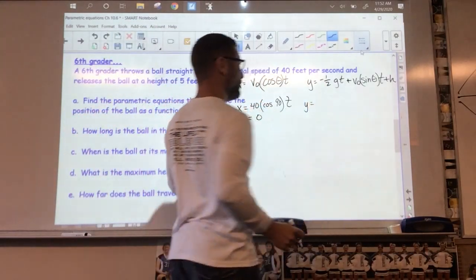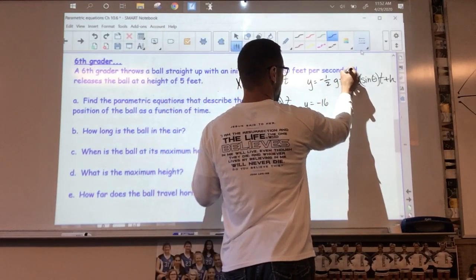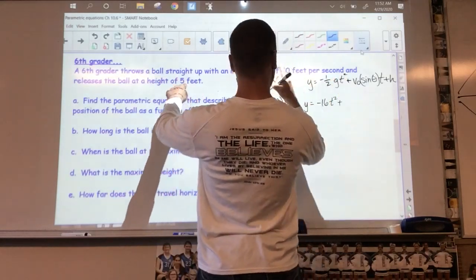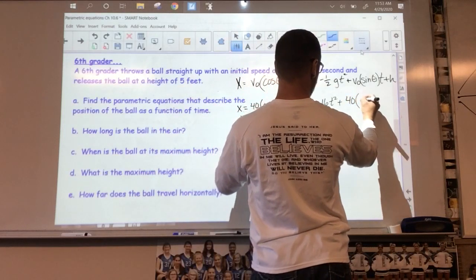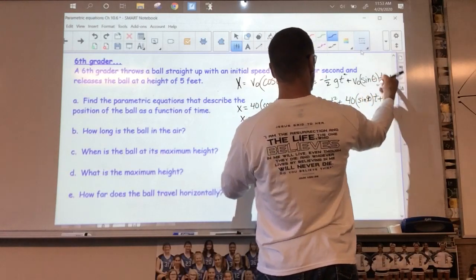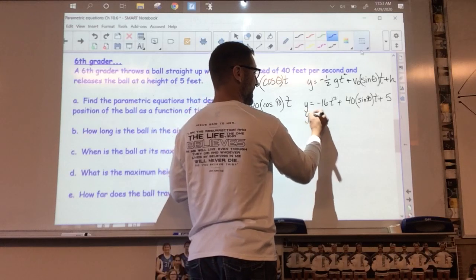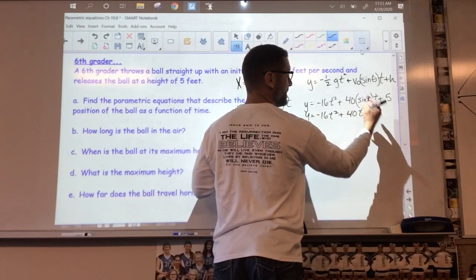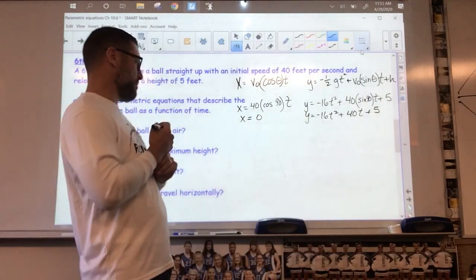This one y equals negative one half of g. This is in feet per second again. So the gravitational constant is negative 16t² plus my initial velocity, 40 times the sine of 90, which is 1, times t plus the start height. The start height on this one is 5. We can clean this up: negative 16t² plus 40t plus 5.